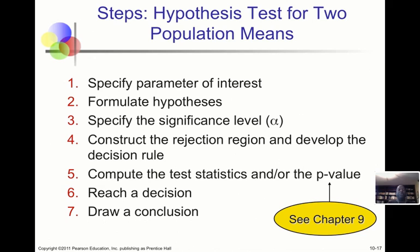We specify the parameters of interest, formulate the hypotheses. Once we know the significance of the test that we want to use, construct the rejection region and develop the rules for rejecting the null hypothesis. Gather the data, compute the test statistics, and reach a decision and conclusion.